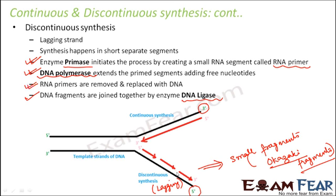Since we do not want any RNA on the DNA, the RNA primers are removed and replaced with DNA. This leaves small fragments of DNA that need to be joined together. Enzyme DNA ligase joins all these small fragments to form a complete strand of DNA. That is how a complete DNA is formed on the lagging strand side, giving you one copy of DNA from each parental strand — completing the process of discontinuous synthesis.